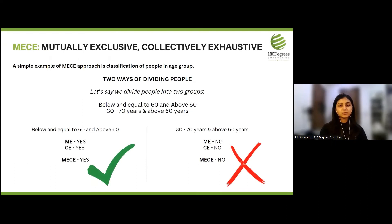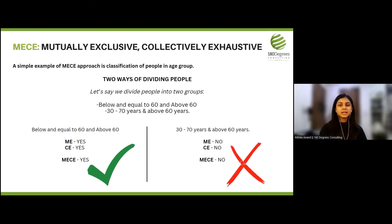Let's look at an example. If we divide people into two groups: below and equal to 60 years versus above 60 years, versus another grouping of 30 to 70 years and above 60 years — which one is MISI? The first category is mutually exclusive and collectively exhaustive because there is a clear distinction and no overlap. However, the second group is clearly not MISI because 'above 60 years' falls within the first category, creating an overlap.